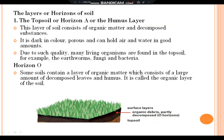The topsoil, or Horizon A, is the humus layer. This layer of soil consists of organic matter and decomposed substances. It is dark in color, porous, and can hold air and water in good amounts. Due to such qualities, many living organisms are found in the topsoil, for example, earthworms, fungi, and bacteria.